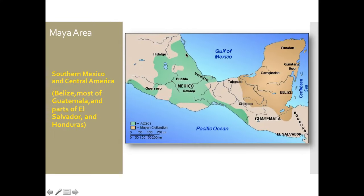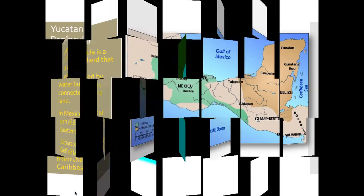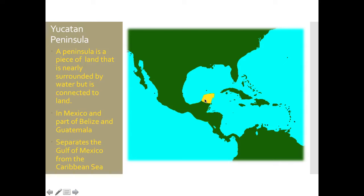On this map, you can see the Aztecs were up in the green areas. The Maya were to the south and east on the Yucatan Peninsula. Here is the Yucatan Peninsula — notice this is the Gulf of Mexico. A peninsula is a piece of land surrounded on three sides by water.